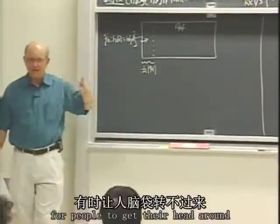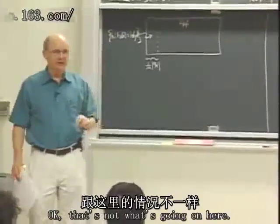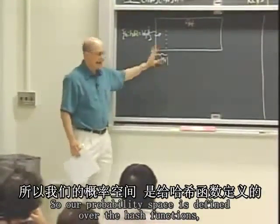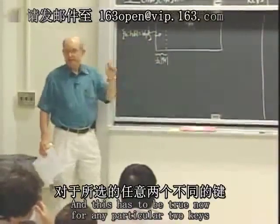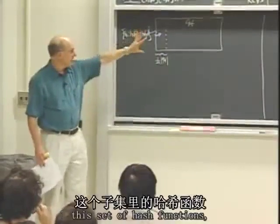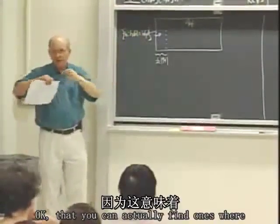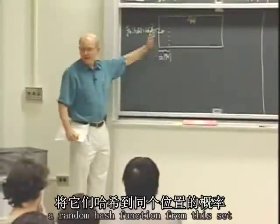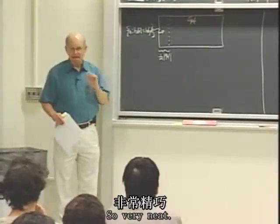This is a little bit hard sometimes for people to get their head around, because we're used to thinking of perhaps picking keys at random. That's not what's going on here. We're picking hash functions at random — our probability space is defined over the hash functions, not over the keys. And this has to be true for any particular two distinct keys that I pick. That you can actually find a set where no matter what two elements I pick, the odds are exactly one in m that a random hash function from this set is going to hash them to the same place. Very neat, very neat property.